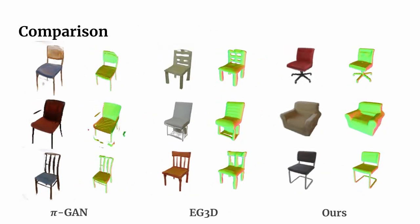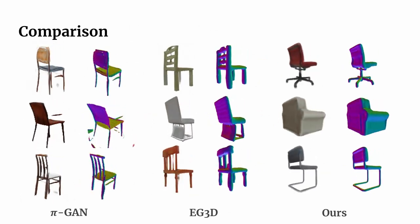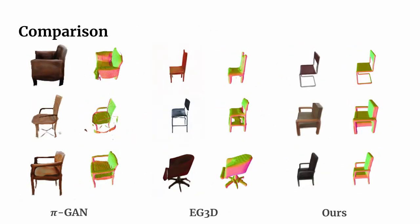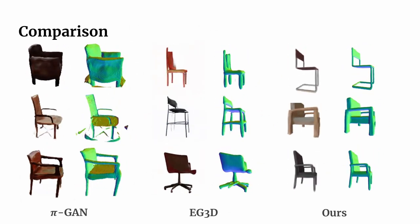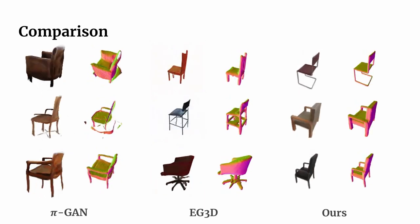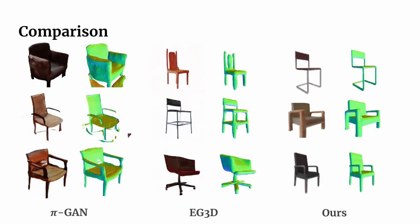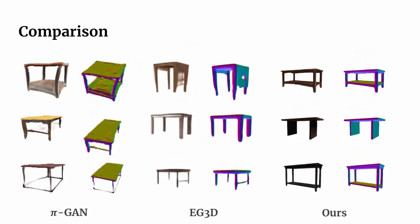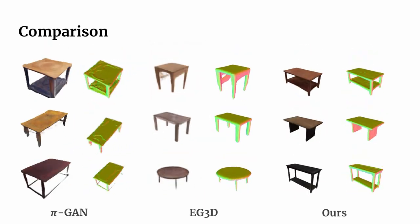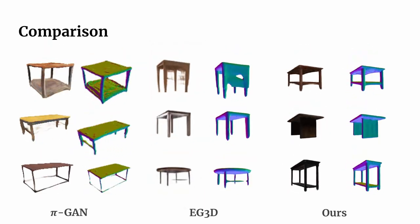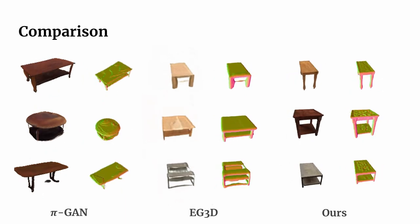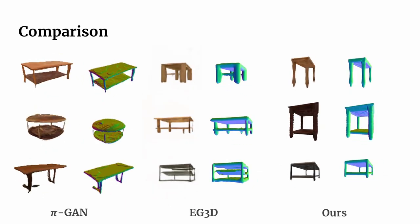Compared to state-of-the-art 3D-aware generative adversarial networks like PaGAN or EG3D, our joint 2D-3D diffusion-based objective leads to better rendering quality and notably more accurate underlying 3D shapes.